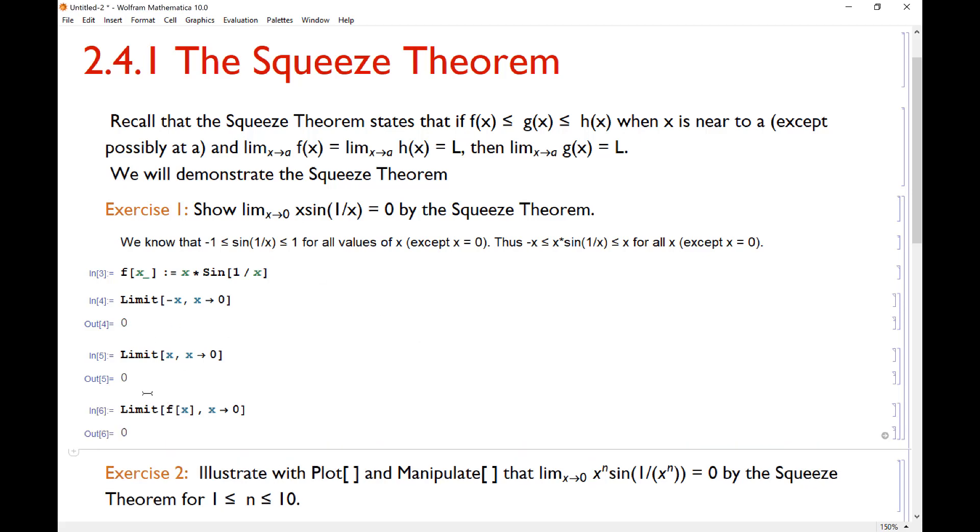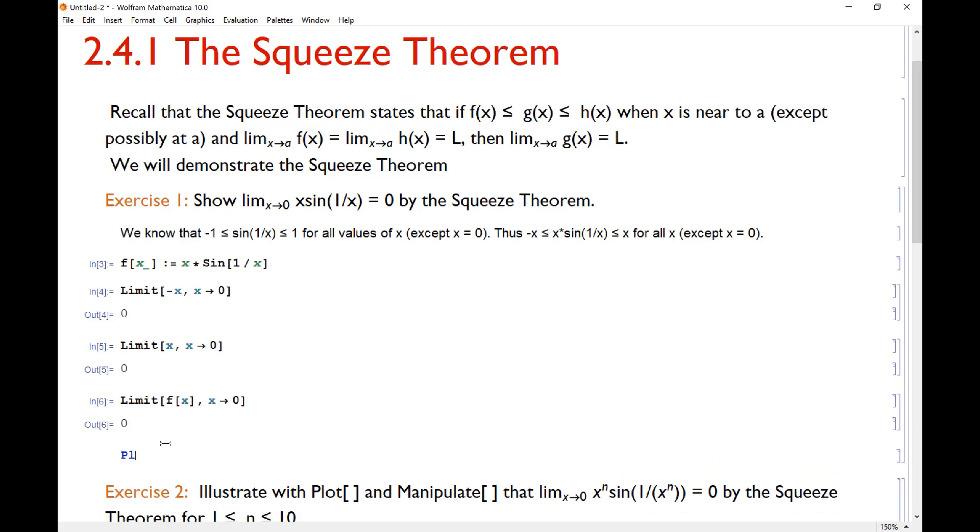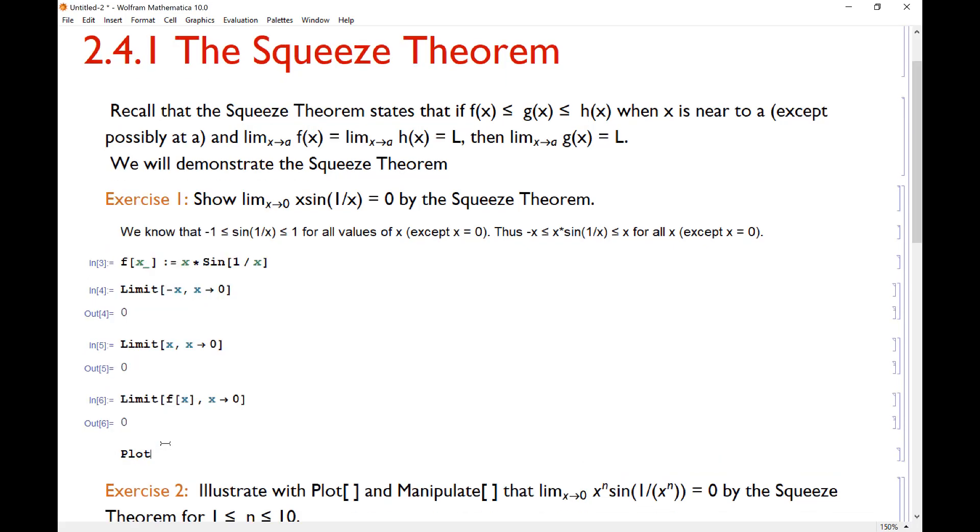Now this is one thing to see it. If we write it down algebraically, it may look a little more meaningful to us than just typing it three times in Mathematica until I bring in a plot. So if I plot these three functions, -x, f(x) in the middle, and x, and let's get close to 0. So let's go from -0.5 to 0.5.